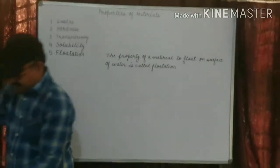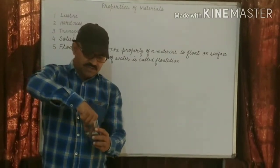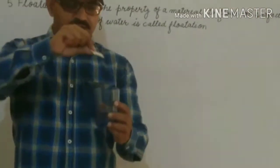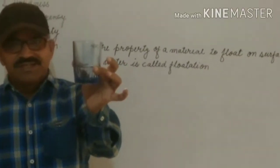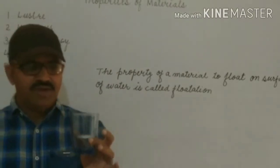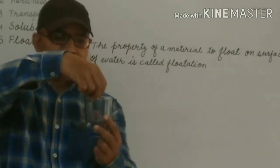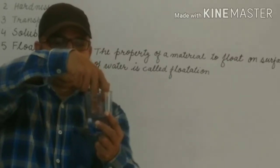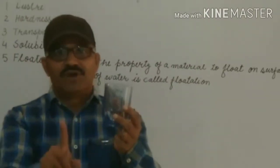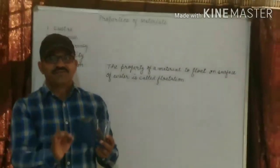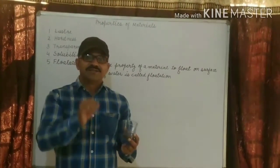We perform one small activity. We take a glass tumbler, fill it with water, and take a piece of wood. Will it sink or will it float? It will float. You can see, because it is less dense than the water. So the property of a material to float on the surface of water is called floatation, and it depends upon the density of that material.